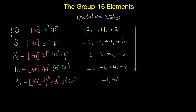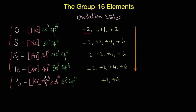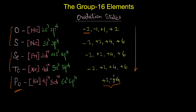Looking at the physical nature of these elements: oxygen and sulfur are non-metals, selenium and tellurium are metalloids, whereas polonium is a metal. In other words, metallic character increases as we go down the group — the heavier, larger atoms are much more likely to lose electrons. This is why polonium almost never shows a −2 oxidation state.